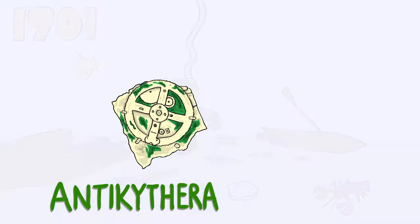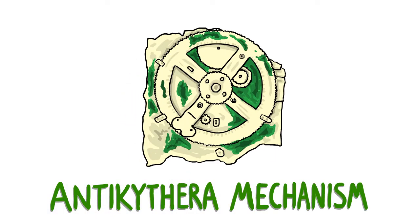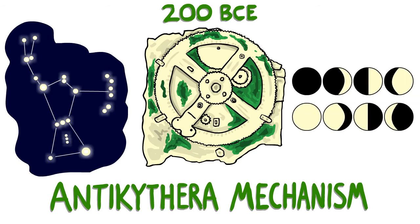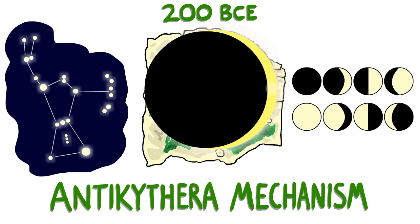It's known as the Antikythera Mechanism, an ancient computer from around 200 BCE that can predict celestial bodies, phases of the Moon, and, you guessed it, solar eclipses.